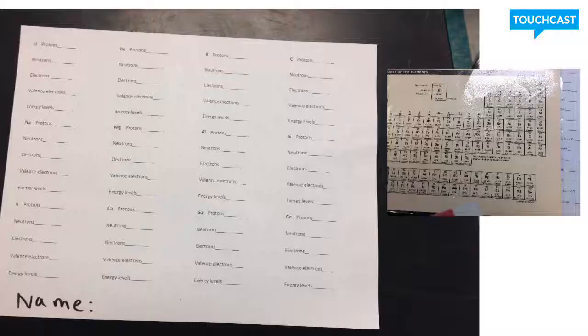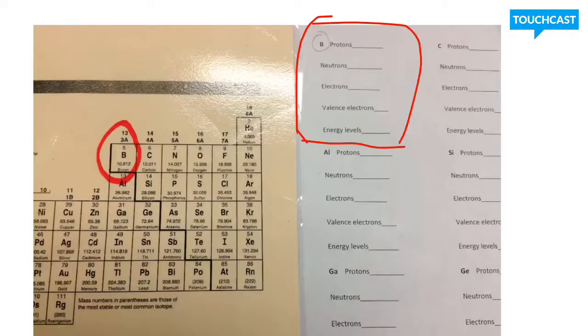Alright, so let's go ahead and start with beryllium. Actually, sorry, we're not doing beryllium, instead we're doing boron. Go ahead and find boron on your paper, it should be in the third column, and then find it on your periodic table.